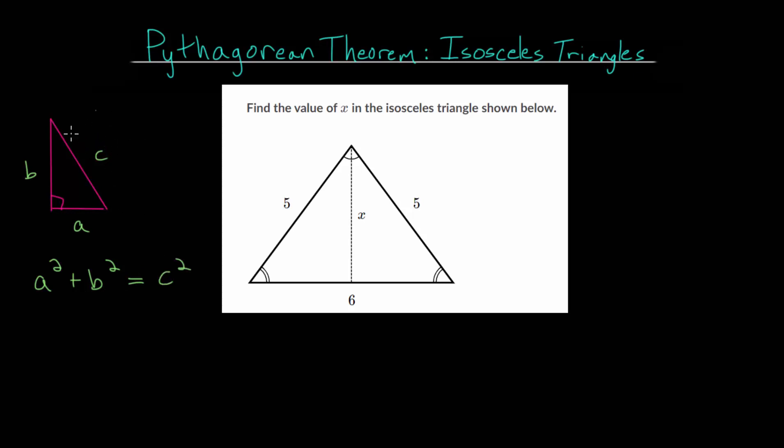Remember, the hypotenuse is just the long side of your right triangle, and it's always opposite the right angle. So we can use this Pythagorean Theorem to find one of the missing side lengths.